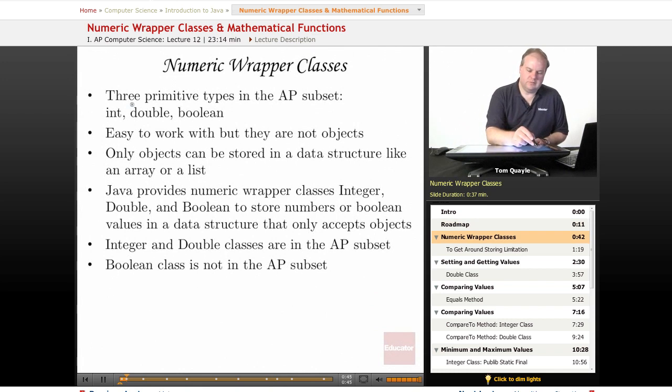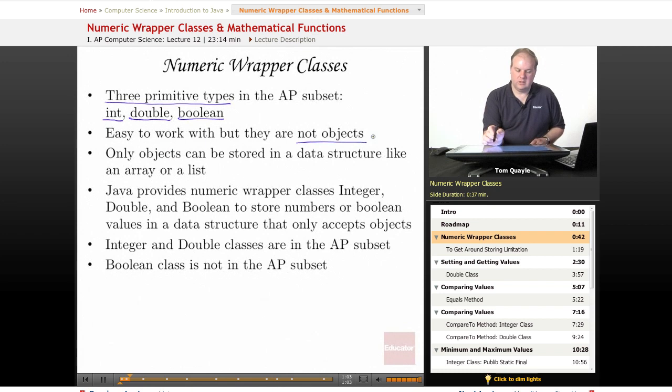In previous lessons, we've talked about the fact that there are three primitive types in the AP subset: int for integer data, double for floating point numbers, and boolean for values that simply are either true or false. These are easy to work with, but they are not objects. And only objects can be stored in a data structure like an array or a list. You cannot store ints or doubles or booleans or any of the other primitive types in an array or list or other type of data structure.